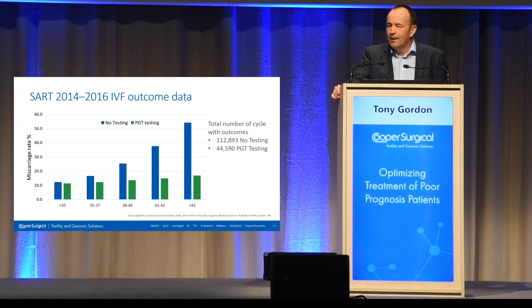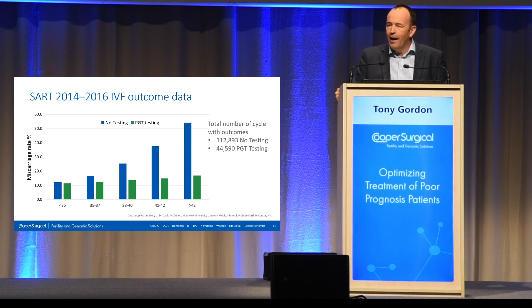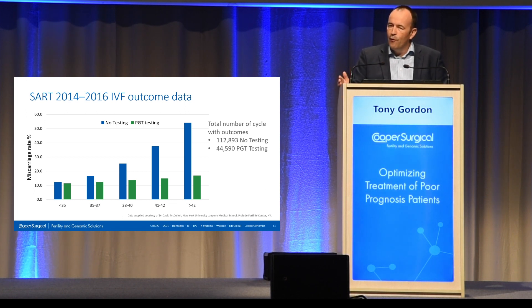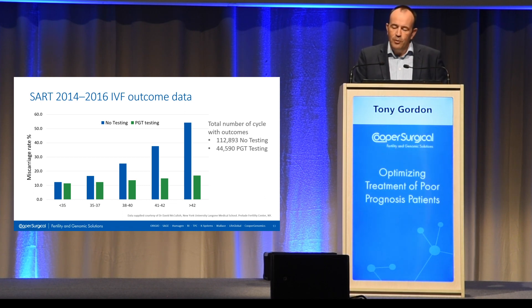You can see that if you do a PGT-A test, you really remove the incidence of miscarriage to a great extent with maternal age. The aneuploidy in advanced maternal age patients, as you might expect, has a very strong effect. But going back to normal sperm, normal egg, normal embryo — if you can find that normal embryo, and I appreciate it's much more difficult in advanced maternal age patients, you can really reduce the incidence of miscarriage greatly. A large portion of that data came from Cooper Genomics.